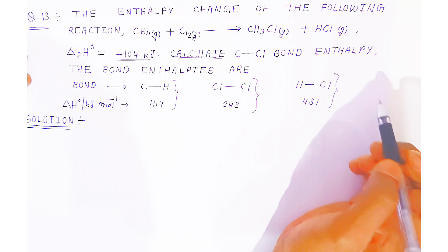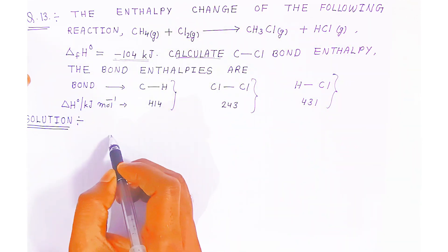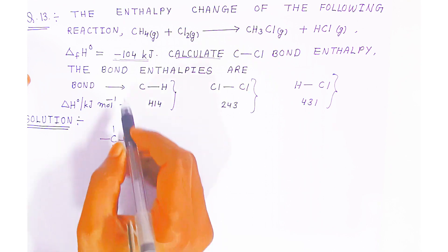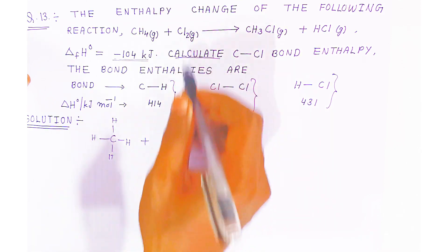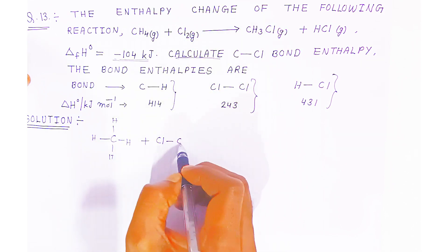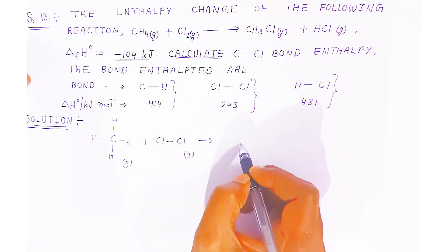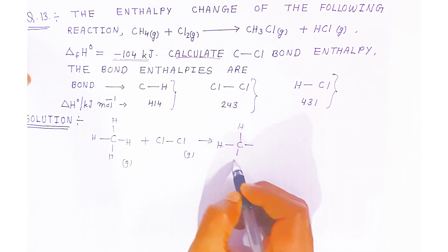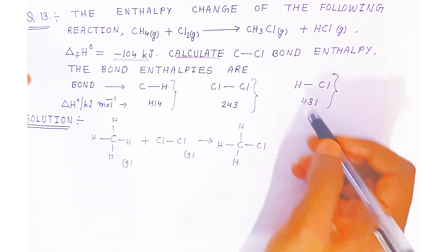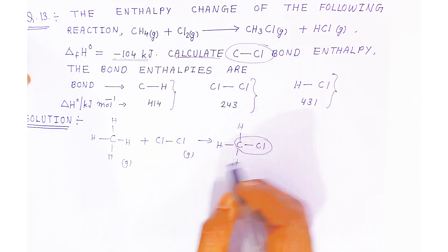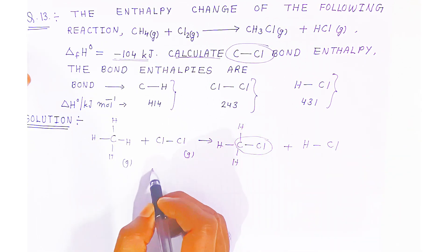So we have to find the bond enthalpy between carbon and chloride. Let's see the reaction. Methane gas — carbon with 4 hydrogens — at the reactant side you have 4 C-H bonds. It reacts with chlorine gas, which has a Cl-Cl bond. The products are CH3Cl and HCl. In CH3Cl you have 3 C-H bonds and 1 C-Cl bond. In HCl you have 1 H-Cl bond.